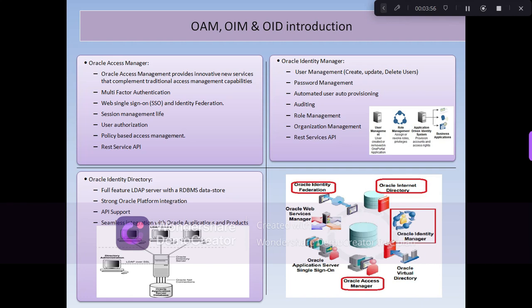For user authorization, only authorized users can access resources. OAM provides various authorization levels such as protected resources, public resources, and excluded resources. With policy-based access management, you can configure that a user with a particular role can access a specific journey or module — for example, the order journey — by assigning a role and defining policies for that role.